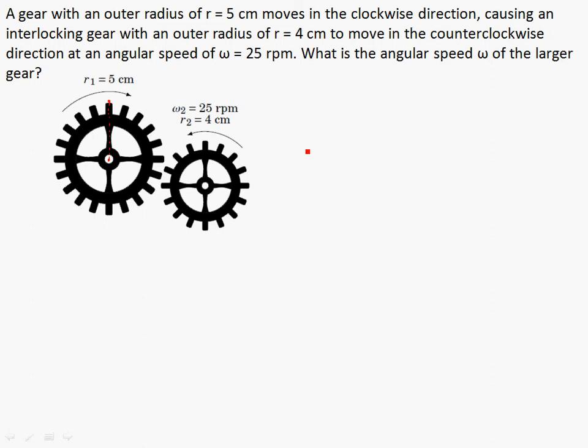So this takes a moment maybe to wrap your mind around. So you know, we're given a bunch of stuff here. W2, R2. So angular speed of the small one, the radius of the small one, the radius of the large one, and we're asked to find this one. We're asked to find W1 here.